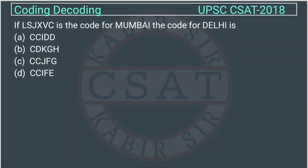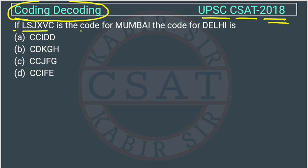This is a question of reasoning taken from chapter coding and decoding, as set by UPSC in the CSAT exam of 2018. If this is the code for Mumbai, then what is the code for Delhi? The language used in the question is important here.